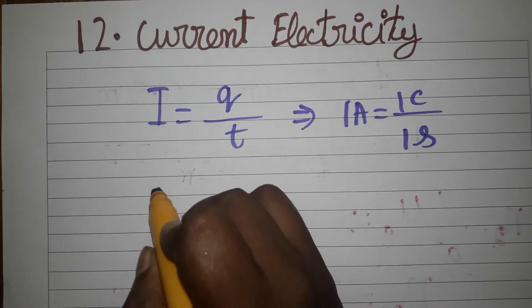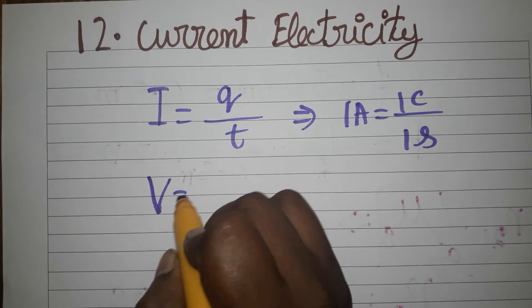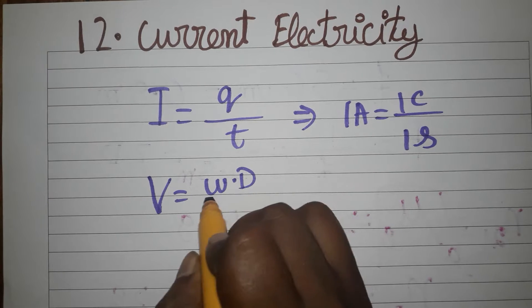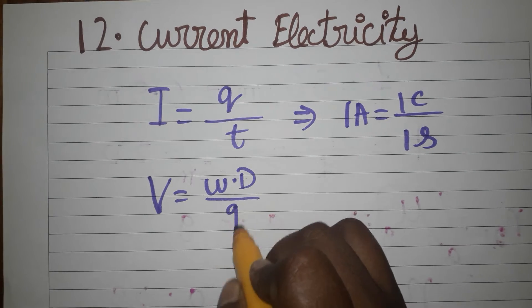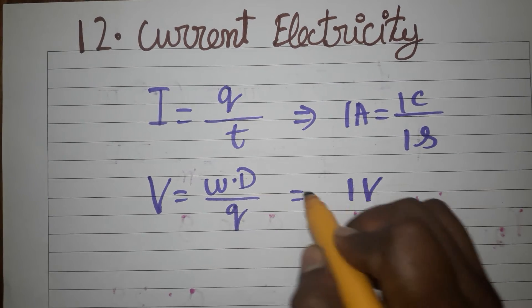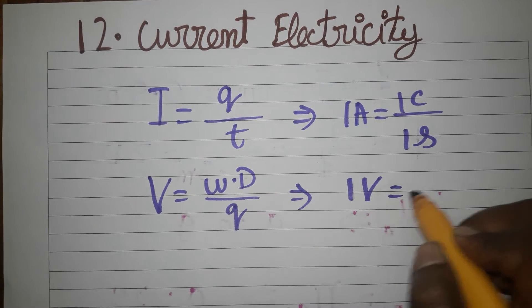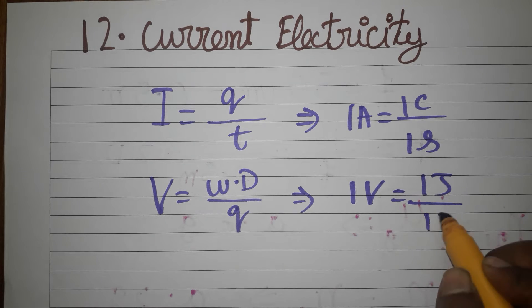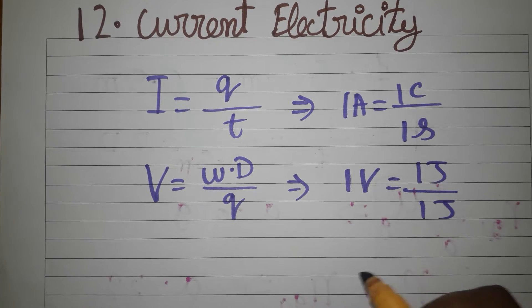The next one: voltage is equal to work done divided by charge. One volt is equal to one joule per one coulomb.